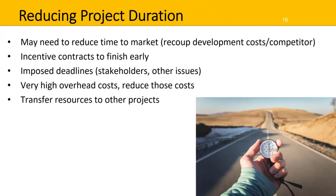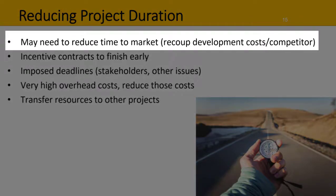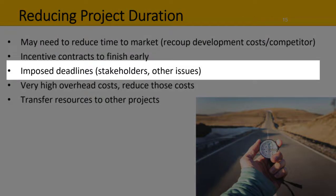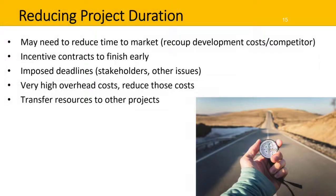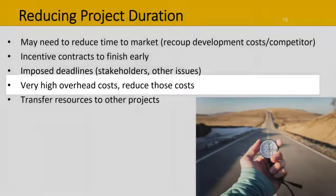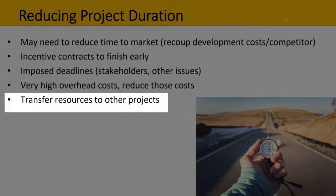In some instances, you'll want to reduce the project's duration — that is, get it done faster. You may need to reduce time to market, for example, to recoup development costs or to respond to a competitor. You might have incentive contracts to finish early or imposed deadlines — for example, the CEO or director might want the project completed by a certain date. You might have very high overhead costs and need to reduce those, or you'll need to transfer resources such as people and equipment to other projects.